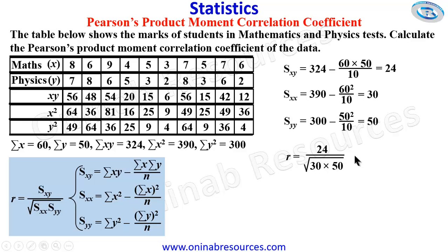So pressing your calculator, we have 0.6197, which represents the Pearson's product moment correlation coefficient of the data represented in the table.